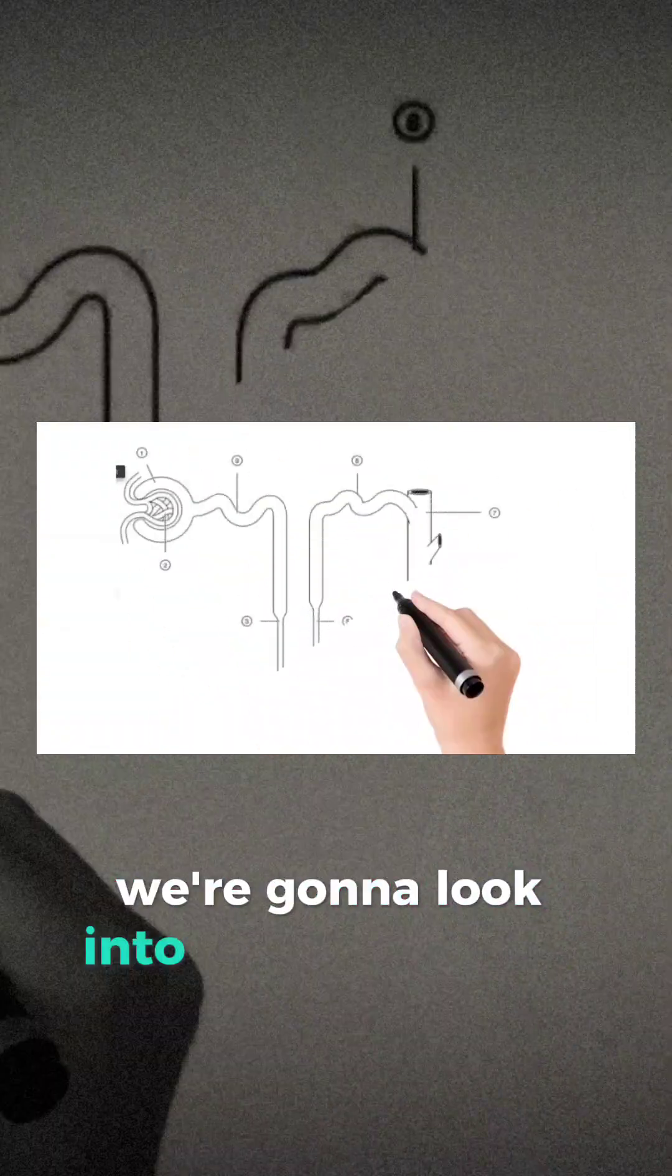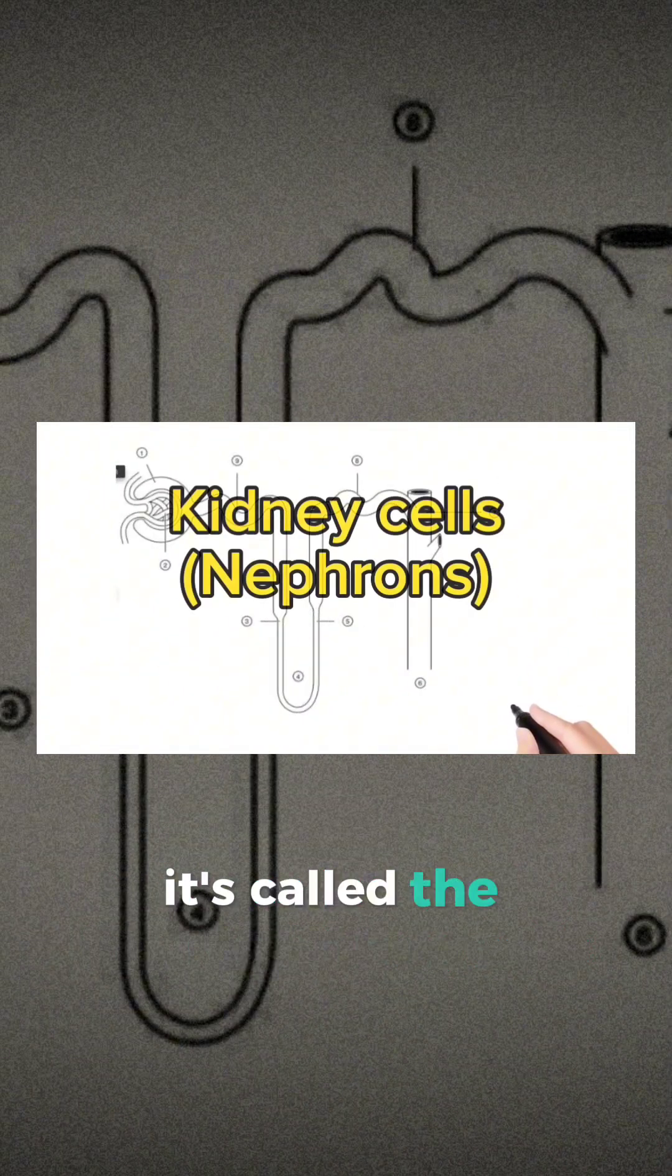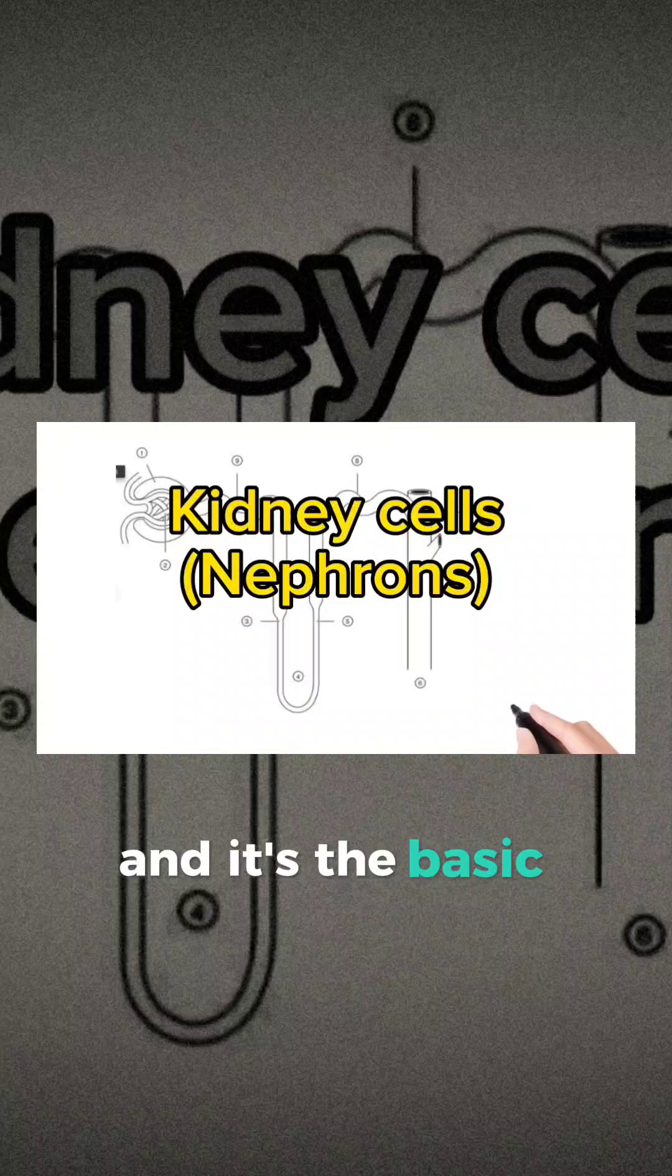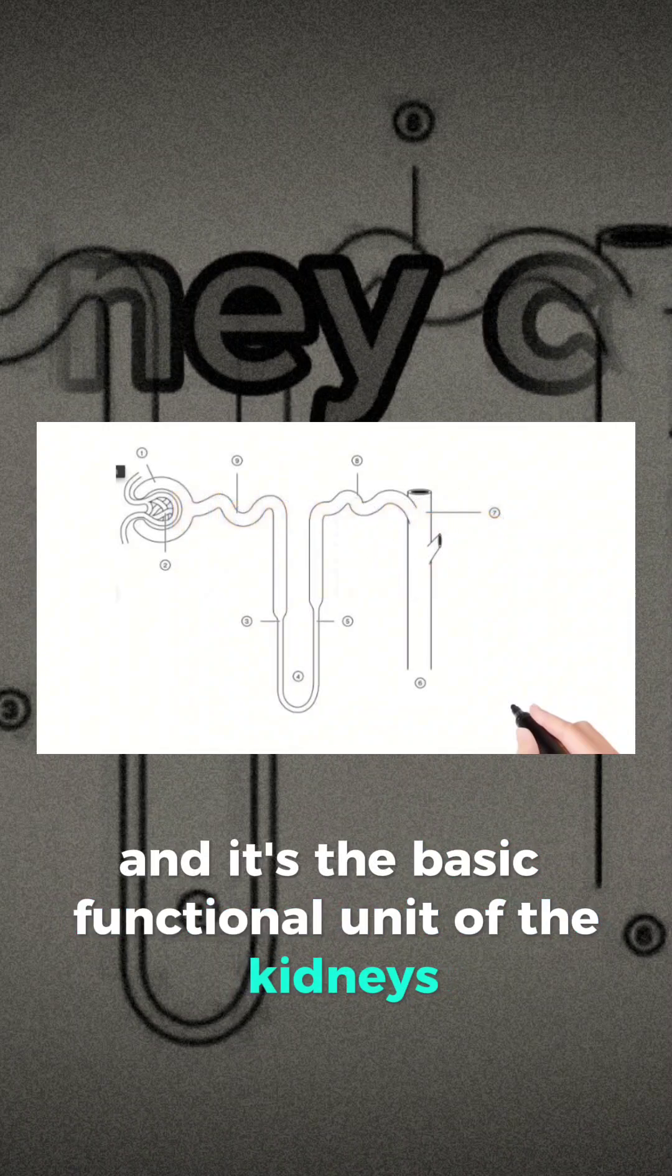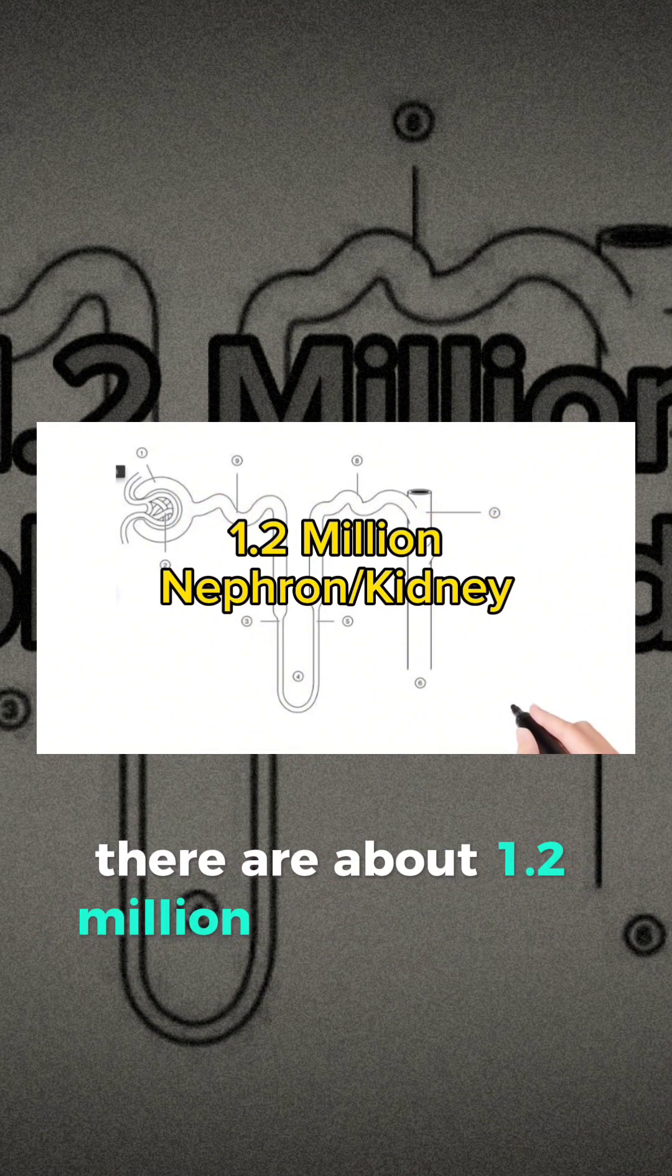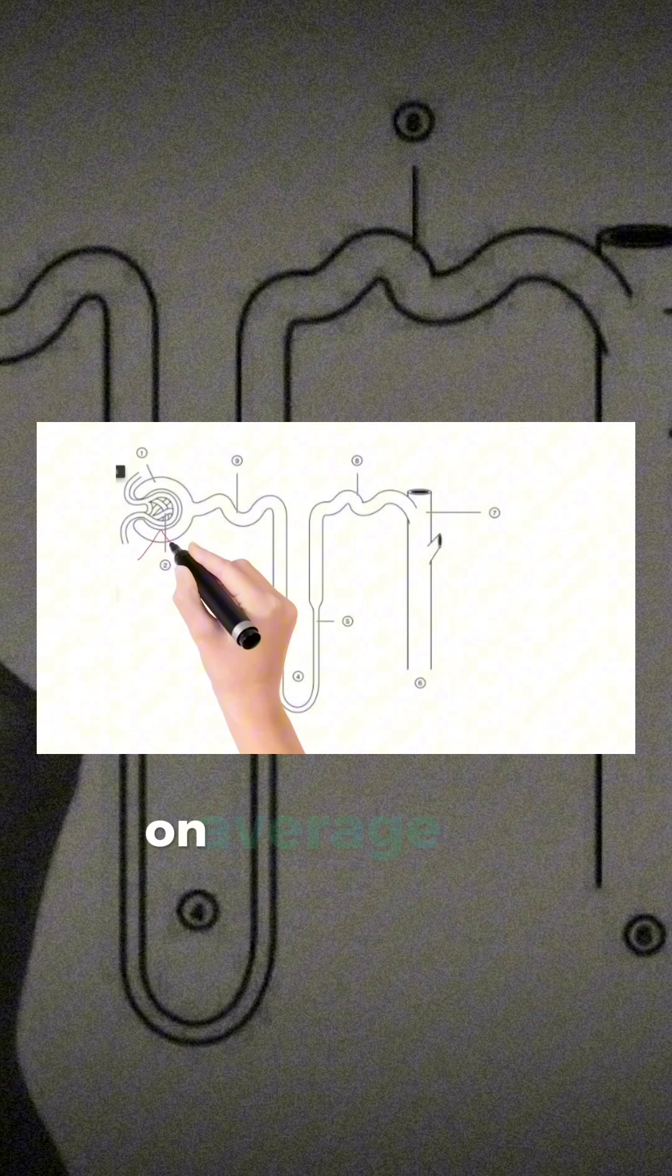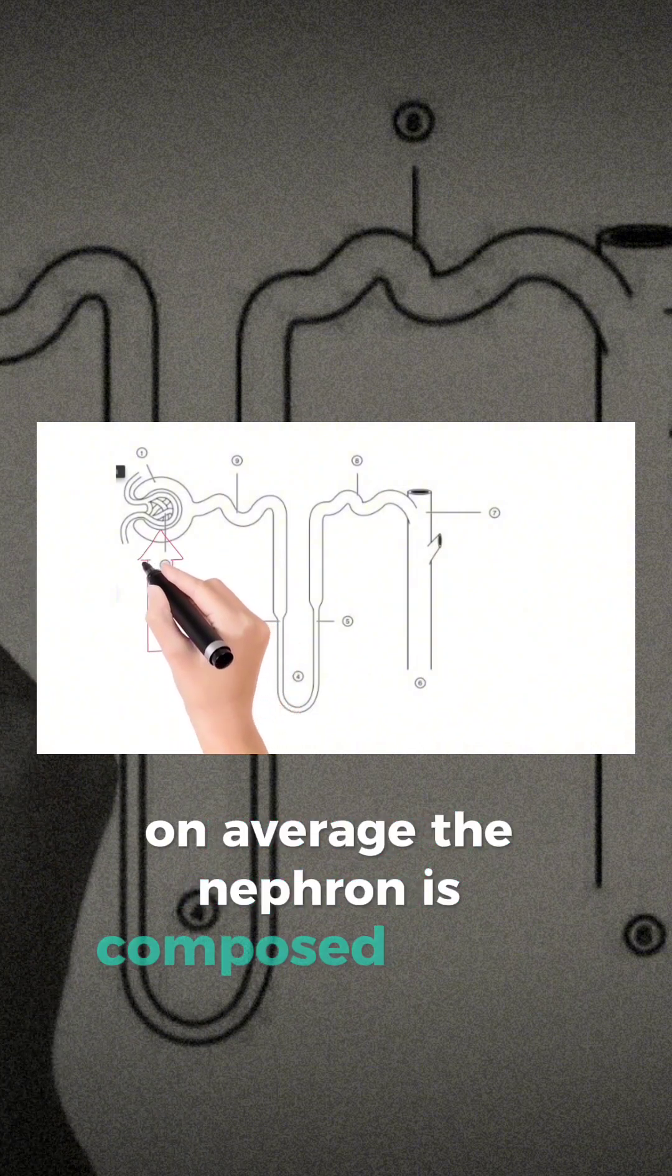In this short video, we're going to look into the kidney cells called nephrons. They're the basic functional unit of the kidneys. There are about 1.2 million nephrons in each kidney on average. The nephron is composed of